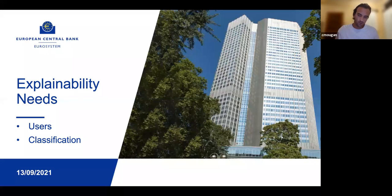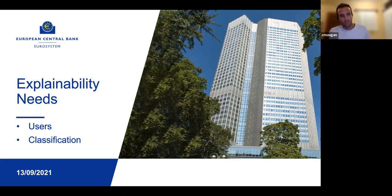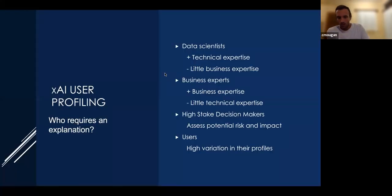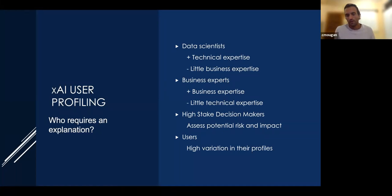So where do we need an explanation? We separated here two different dimensions: the users who may need a potential explanation, and the different classifications of explainable AI needs. For explainable AI user profiling — who can require an explanation — we found four different types of users.